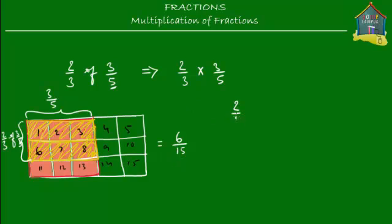Now let's do it mathematically. We have two-thirds times three-fifths. We multiply the numerators by each other: two times three is six. Then we multiply the denominators: three times five is fifteen. So we get six upon fifteen, which is the same as what we found visually. That's all you have to do — multiply the numerators by each other and the denominators by each other.